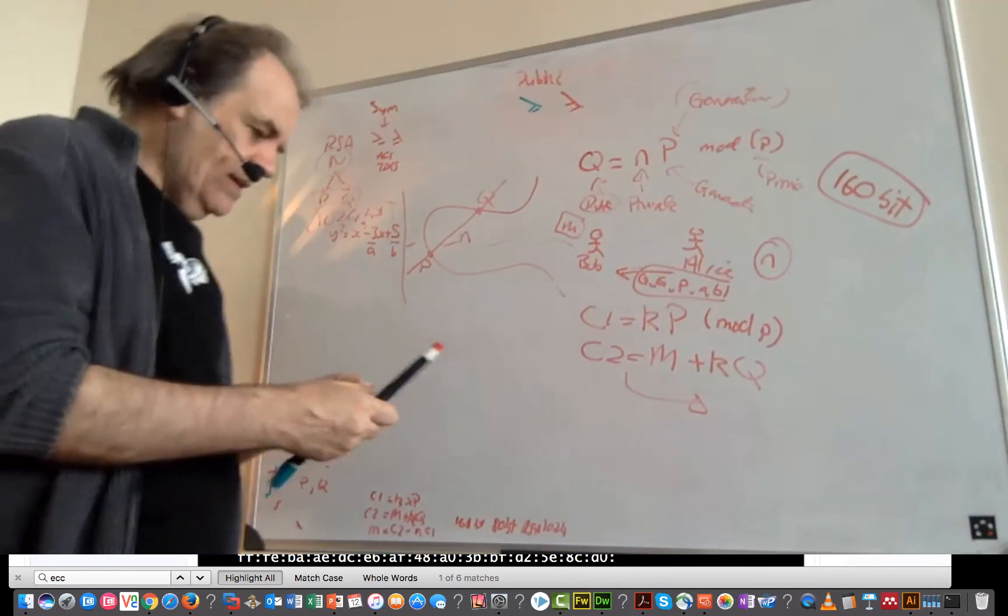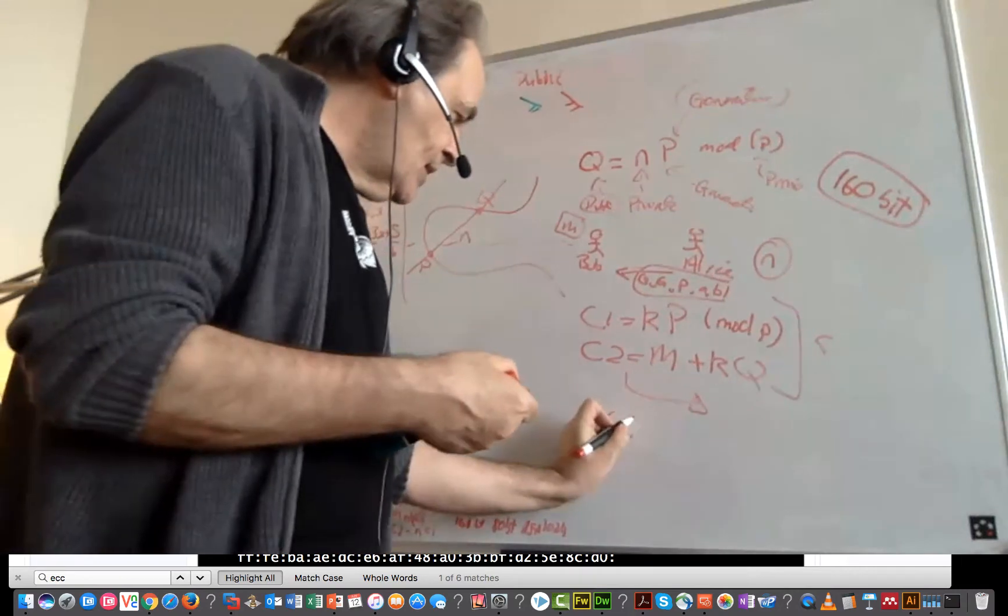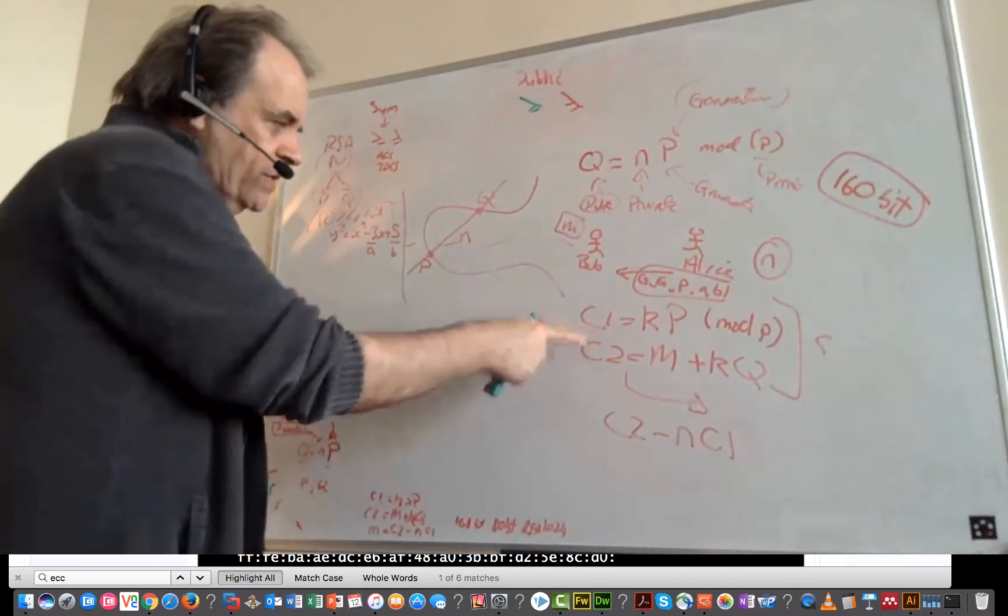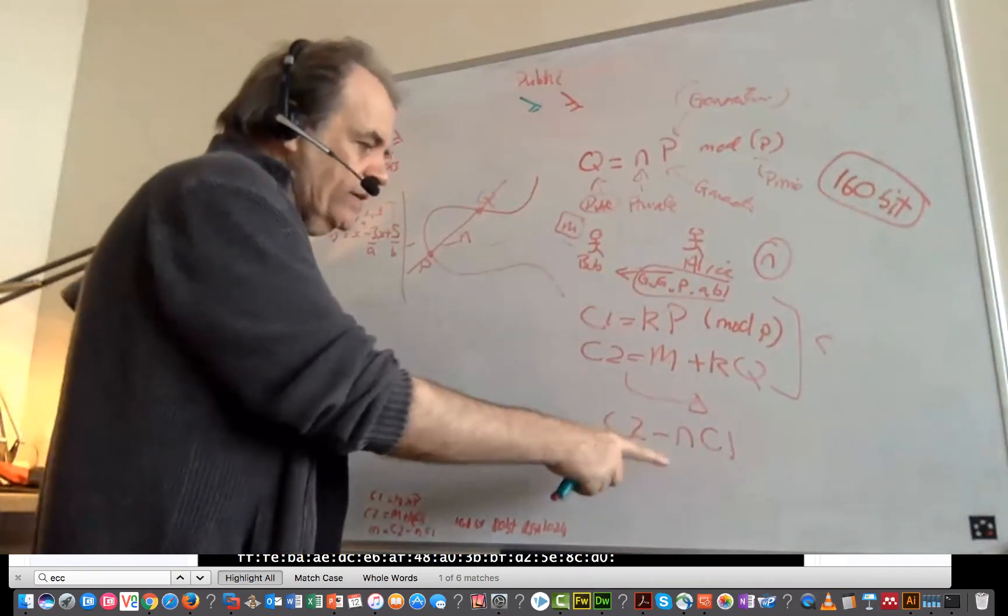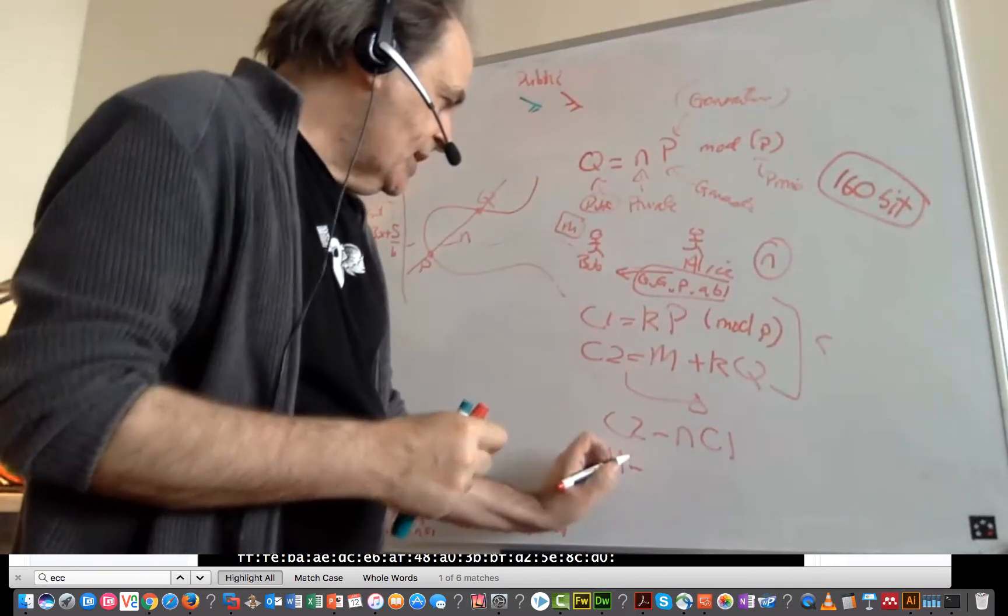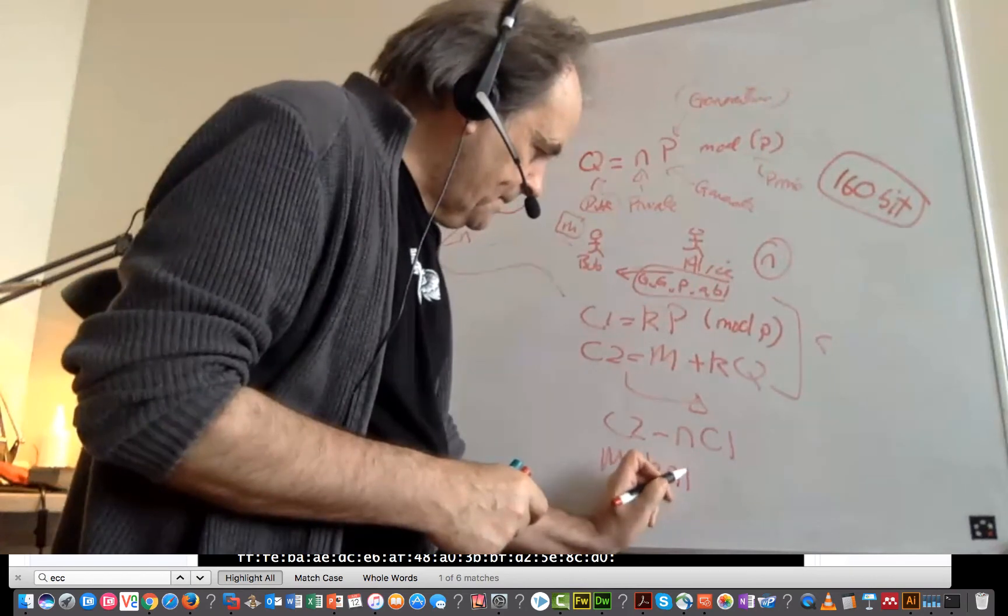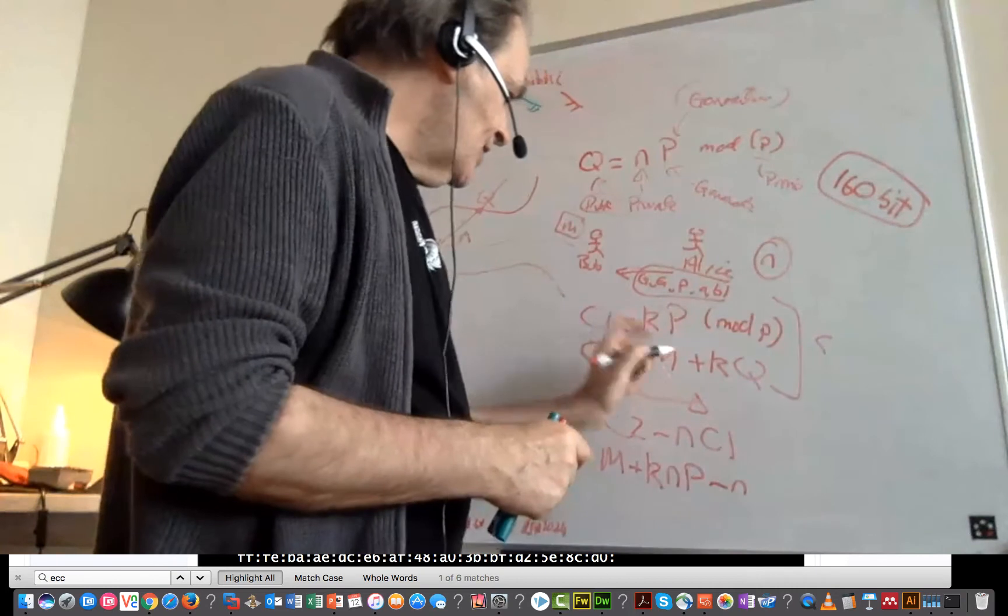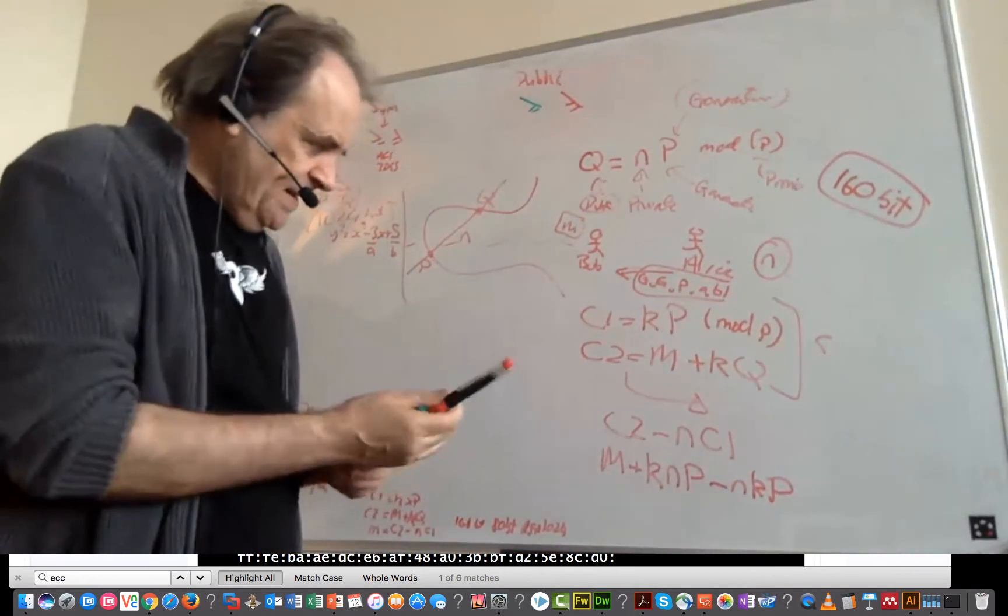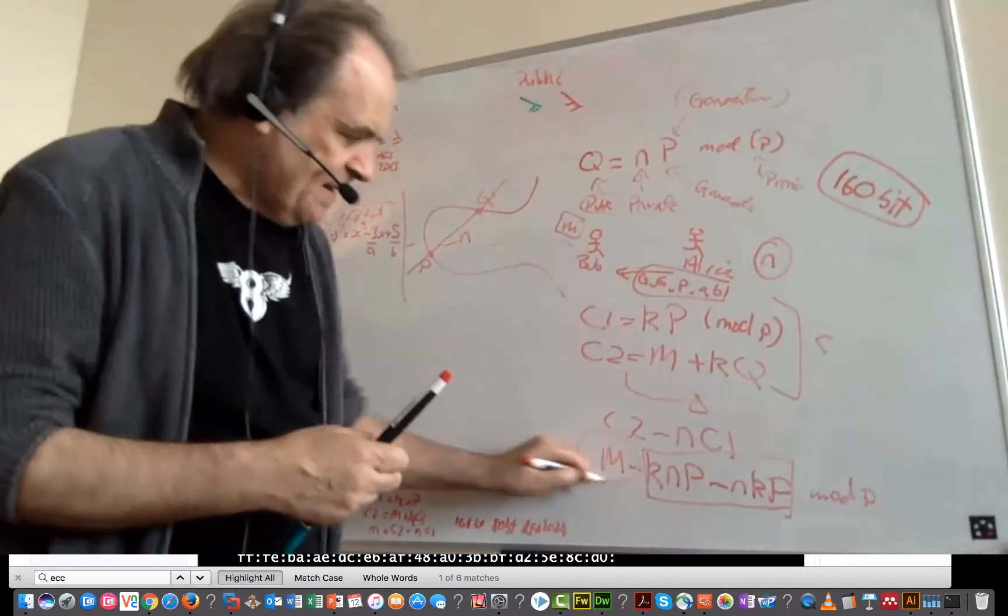Alice will then take, so that's the cipher text, the cipher text. We'll take this one minus her private key times C1. So it's that cipher minus, remember it's still mod P when we're doing the calculations here, times N, that gradient, random number, times C1. So C2 is the message plus K and Q is N times P minus N cipher 1. And one thing you should notice here is that this part, and then it's mod P, this part here cancels itself out so we end up with the message.